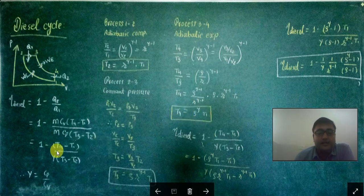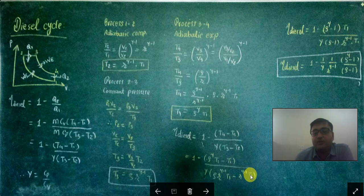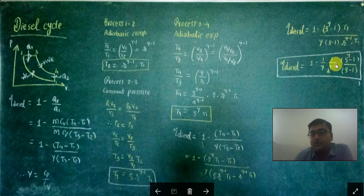Substituting T4 = ρ^γ · T1, T3 = ρ · r^(γ−1) · T1, and T2 = r^(γ−1) · T1 into the efficiency equation, and factoring out T1 from the numerator and r^(γ−1)·T1 from the denominator, the final diesel cycle efficiency is: η = 1 − (1/γ) · (1/r^(γ−1)) · (ρ^γ − 1)/(ρ − 1).